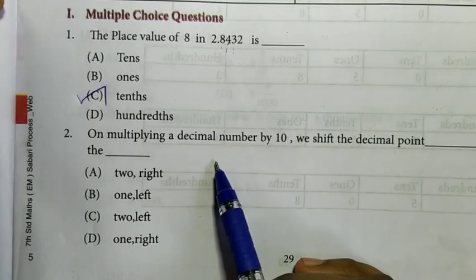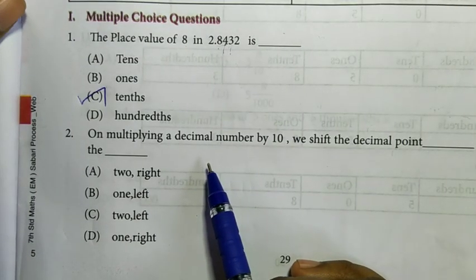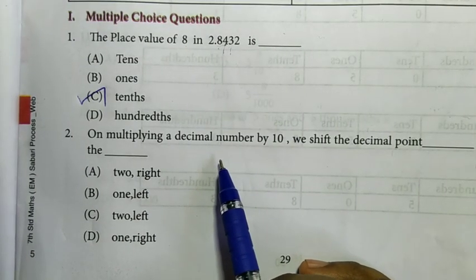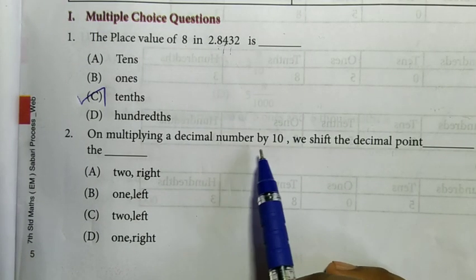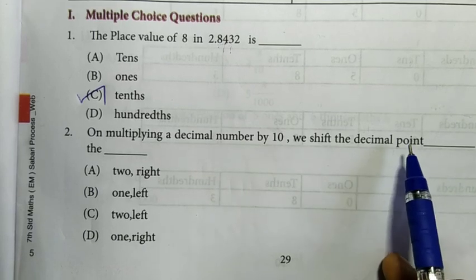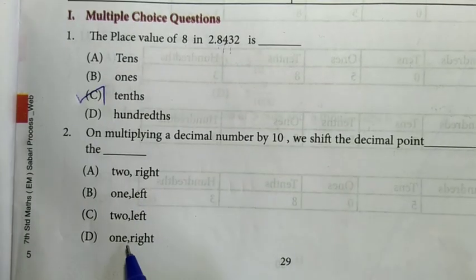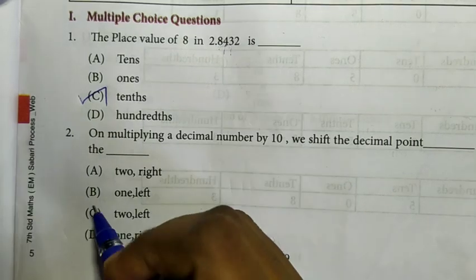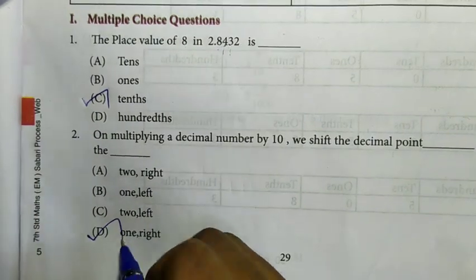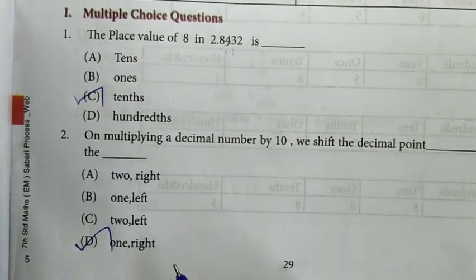Second question: on multiplying a decimal number by 10, we shift the decimal point one place to the right. Answer is option D.